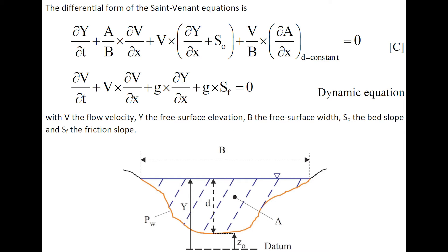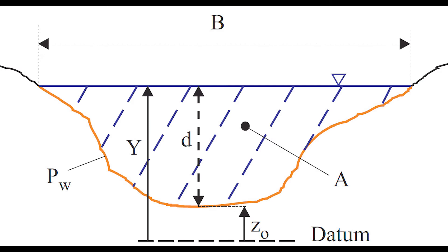The differential form of the Saint-Venant equations is presented here. The following sketch provides the definition of the free surface elevation y, water depth d, free surface width b, cross-section area A, and wetted perimeter P_w.